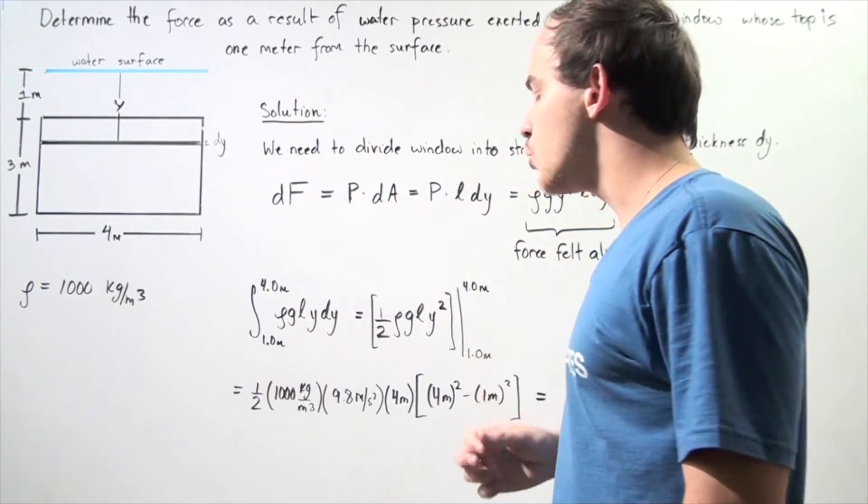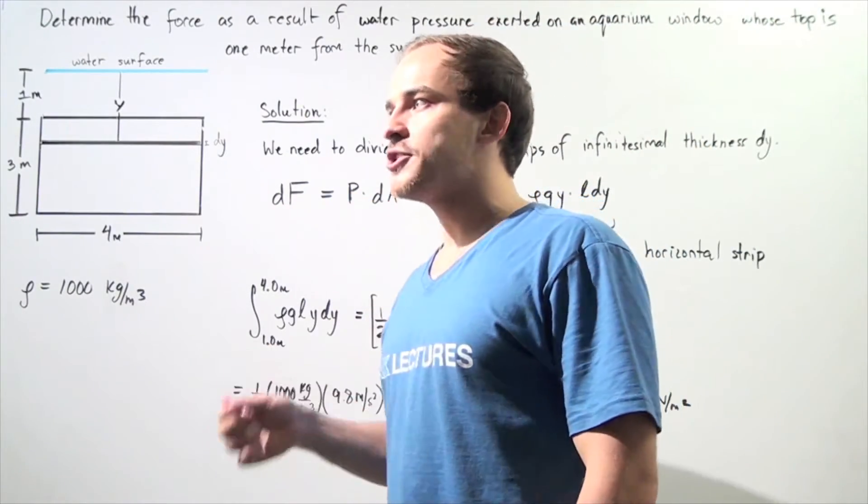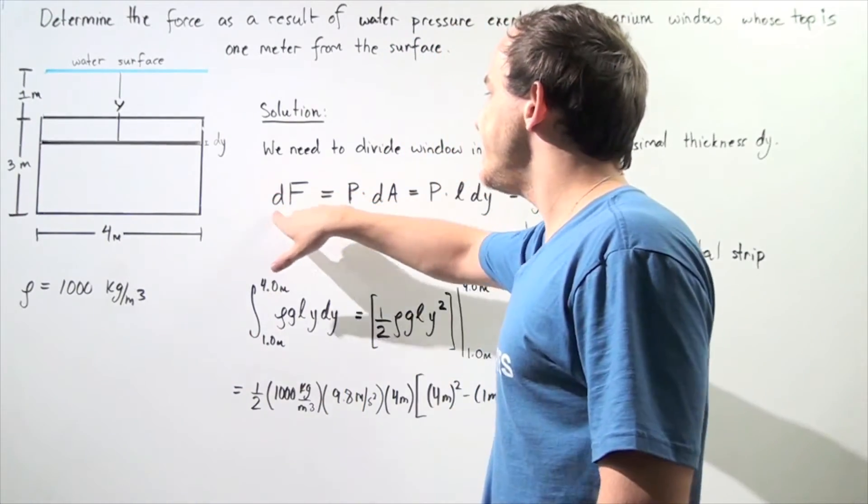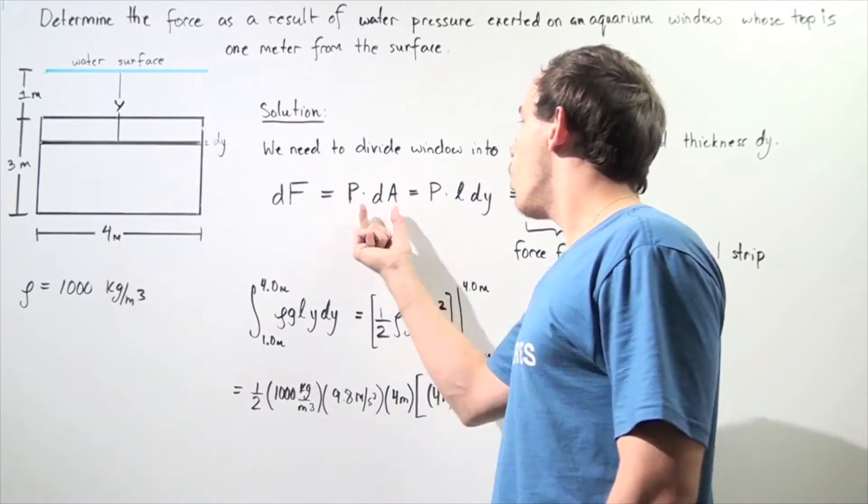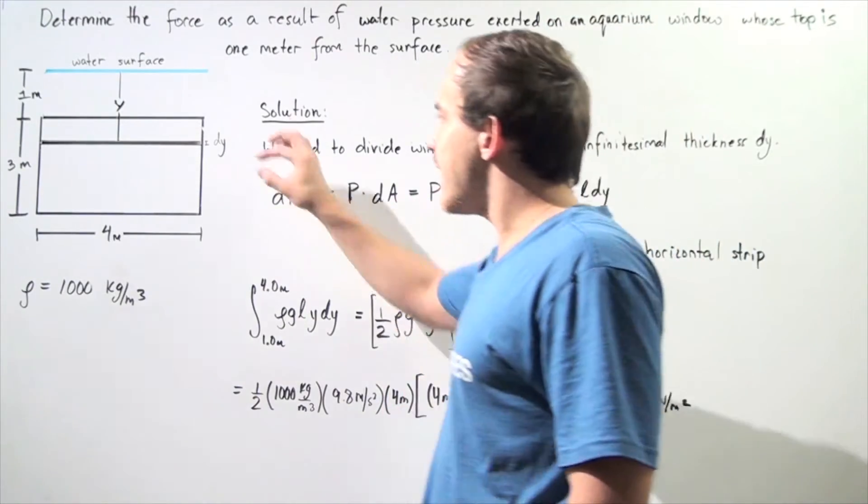So df is equal to - well, force is equal to pressure times area. So that means df is equal to pressure times dA. Now, what exactly is dA? Well, in this case,